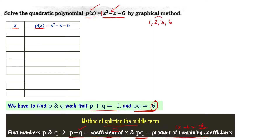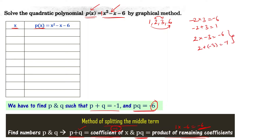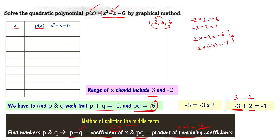Take a pair of factors. Try 2 × 3 = 6, and 1 × 6 = 6. Try -2 × 3 = -6, but -2 + 3 = +1, not -1. Then try 2 × (-3) = -6, and 2 + (-3) = -1. That works! So our two numbers are -3 and 2. The range of x should include both 3 and -2, since those are the zeros.